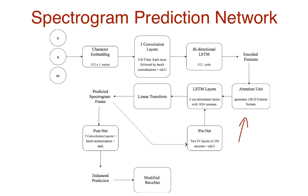The encoded features are passed into an attention unit, which converts them into fixed-length context vectors of size 128 — this is the internal feature representation. In the decoder, the prediction from the previous time step is first passed through a small pre-net of two fully connected layers, each with 256 neurons and a ReLU activation. The pre-net output and the attention context vector are concatenated and processed by two unidirectional LSTM layers with 1024 neurons.